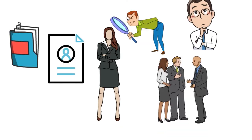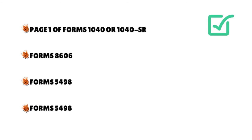What records do you need to keep? To verify the non-taxable part of distributions from your IRAs, including Roth IRAs, keep copies of the following until all distributions are made: page 1 of Forms 1040 or 1040-SR filed for each year you made a non-deductible contribution to a traditional IRA; Forms 8606 and any supporting documents and worksheets for all applicable years; Form 5498 IRA contribution information showing contributions made to a traditional or Roth IRA; Forms 5498 showing the value of your traditional IRAs for each year you received a distribution; and Forms 1099-R for each year you received a distribution.